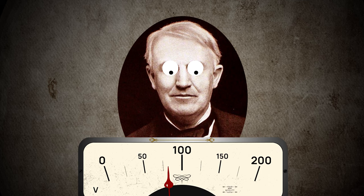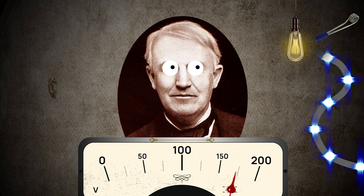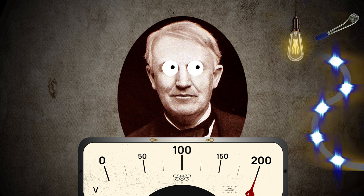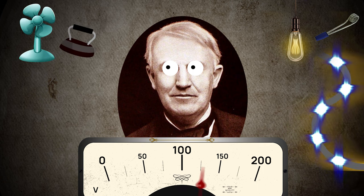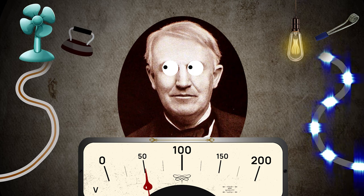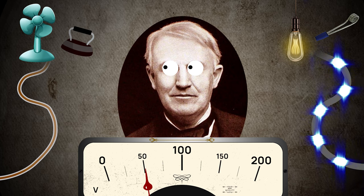Let's figure out how it appeared. There are many versions, but the most reasonable: Thomas Edison is to blame for everything. Choosing the voltage for his power grids — the first in the world, by the way — he was guided by the following: the more voltage, the less current at the same power of the devices, the thinner and cheaper the wires, and most importantly, less loss. But the lower the voltage, the safer and less insulation is required. Everything converged to the figure of 100 volts — a round number, which is excellent.